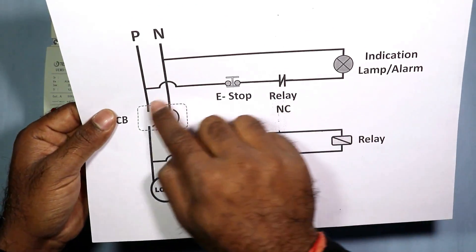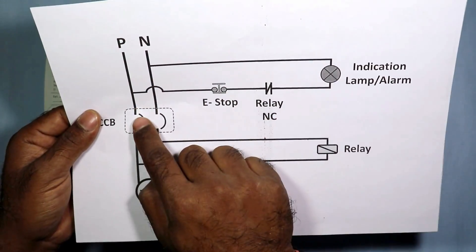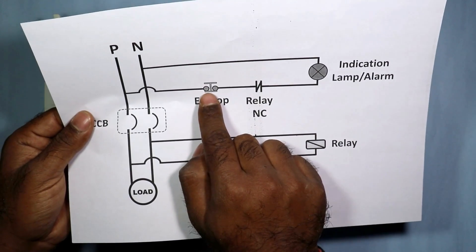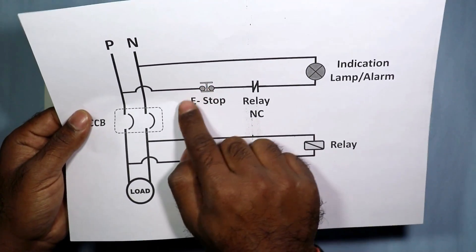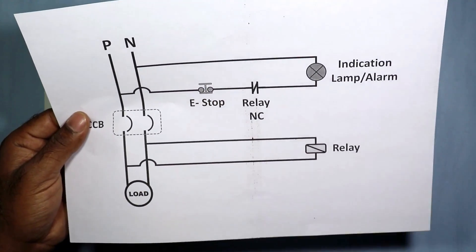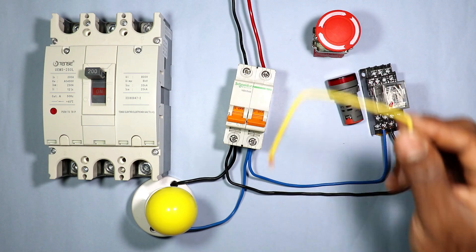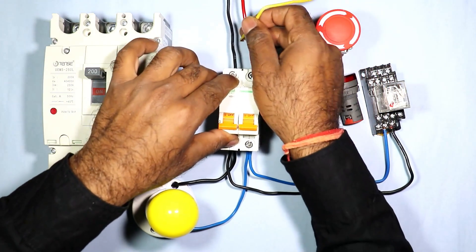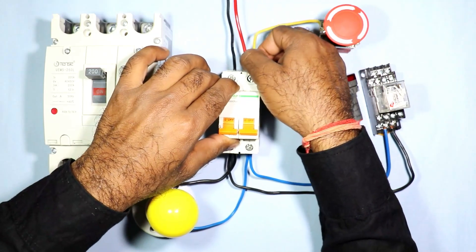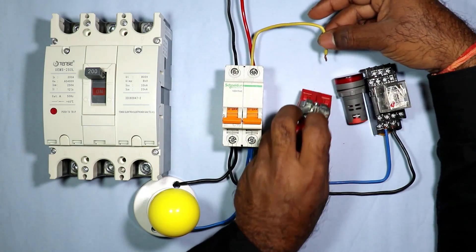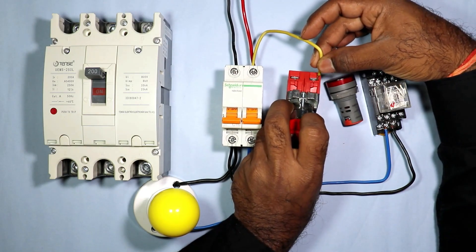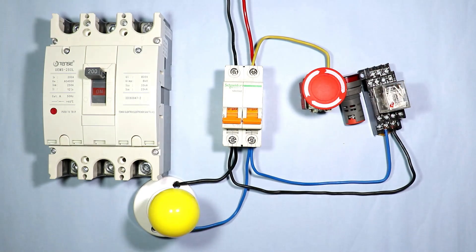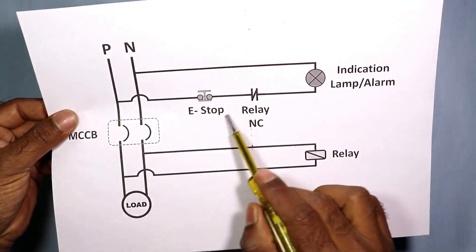After this, from the circuit breaker's incoming phase supply, connect a wire to the emergency stop push button. Take one end of this wire and connect it to the phase supply terminal, then take the other end and provide it as incoming power supply to the stop push button.